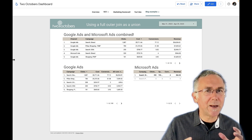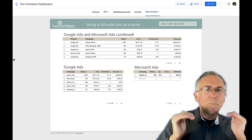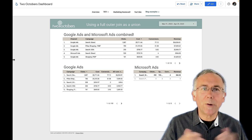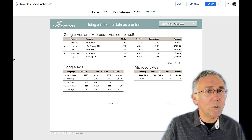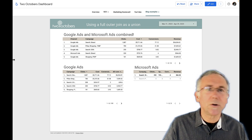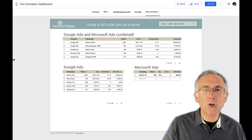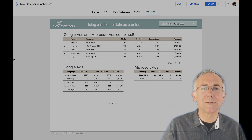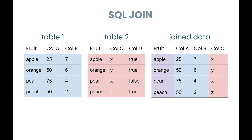The general idea is that you can take data from different advertising channels - I'm going to do Google Ads and Microsoft Ads, but you could do Facebook, Twitter, etc. - and show a cross-channel view of performance. Let me show you what I mean when I say a UNION.